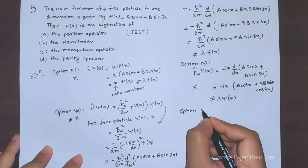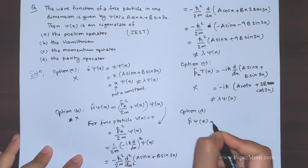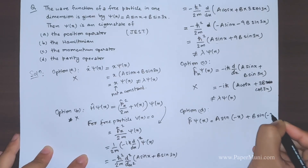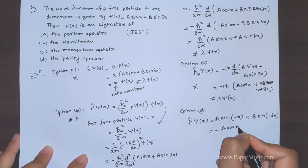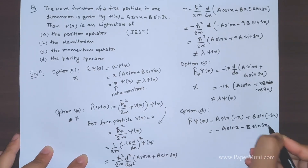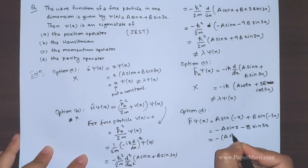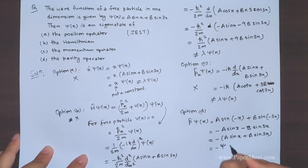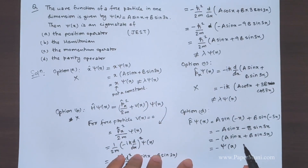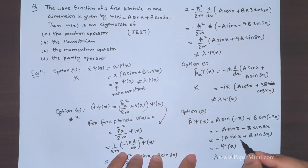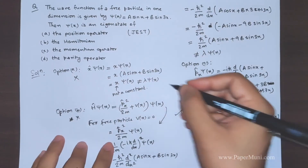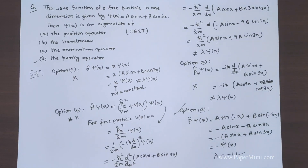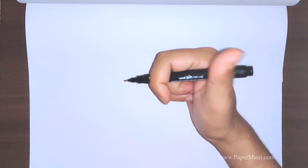Option D: operating the parity operator on ψ(x), we replace x with -x. This gives a·sin(-x) + b·sin(-3x) = -a·sin(x) - b·sin(3x) = -(a·sin(x) + b·sin(3x)) = -ψ(x). So we get back the original wave function with λ = -1, meaning the eigenfunction is odd under parity. The correct answer is the parity operator. Thank you for watching — please like, subscribe, and share with your friends.